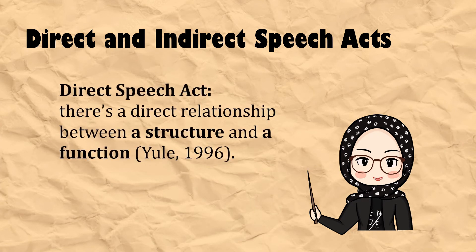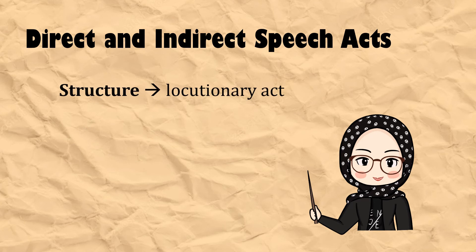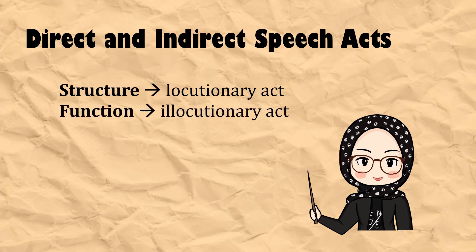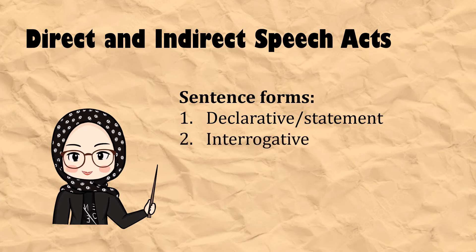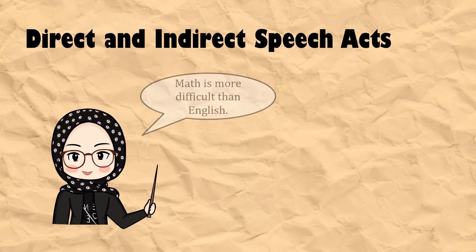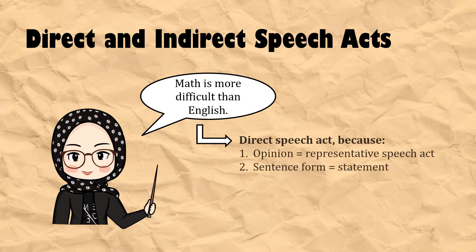A speech act is called a direct speech act when there's a direct relationship between a structure and a function. The structure is the locutionary act — the sentence form. The function is the illocutionary act, that is, the hidden meaning the speaker tries to convey. There are commonly three kinds of sentence forms: declarative or statement, interrogative or question, and imperative. When I give my opinion that 'math is more difficult than English,' this belongs to a direct speech act — my opinion is a representative speech act and the sentence form is a statement.